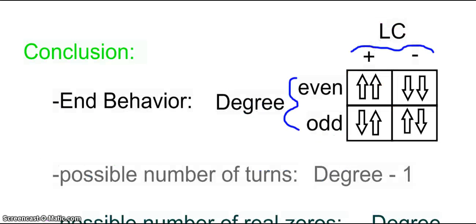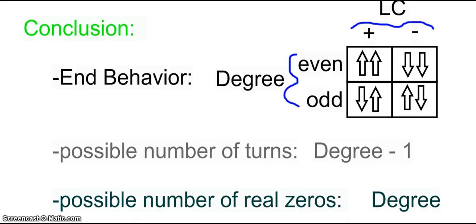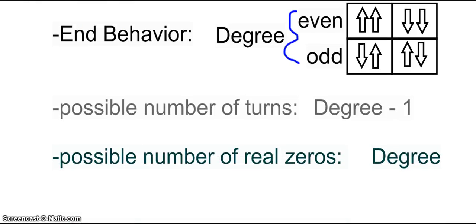Okay, so we want to make sure we understand end behavior. What are we talking about with end behavior? As the graph goes to the extreme left and right, is it going up or down? Possible number of turns. Turns are also called extrema or relative min or max. Possible number of real zeros. And then how to actually find zeros and real zeros. Alright, that was part two.